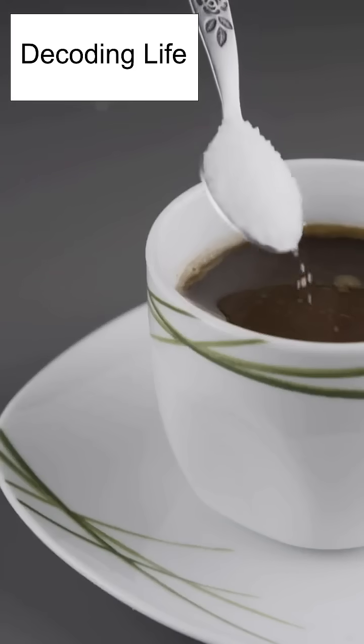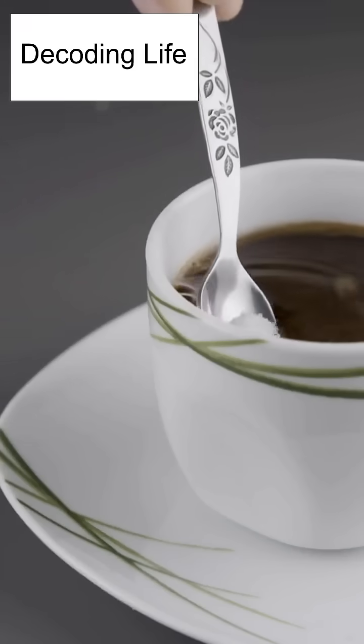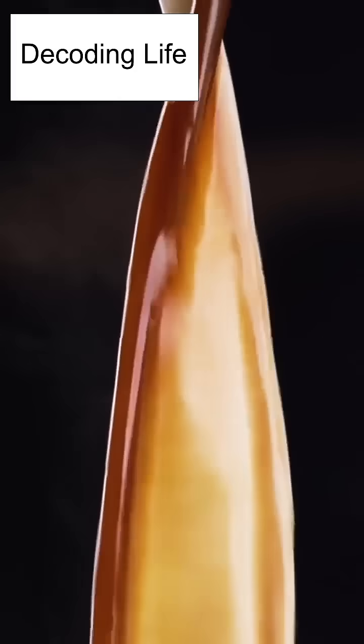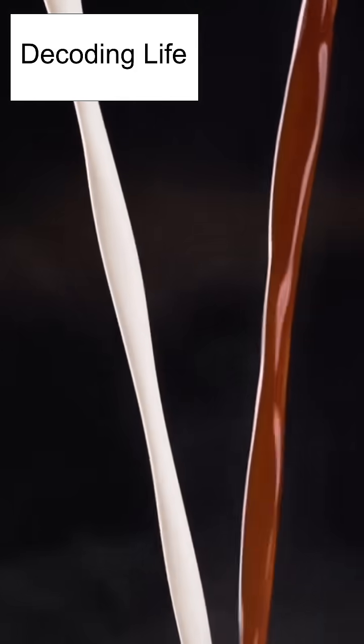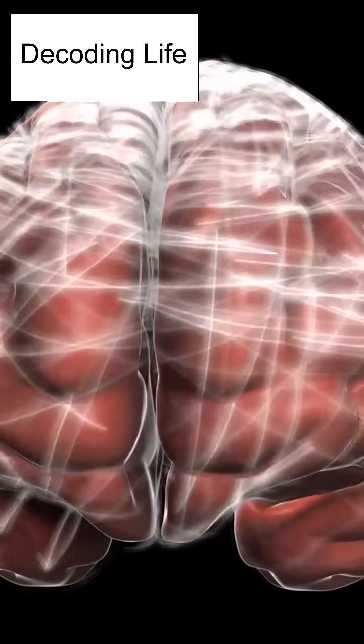Now add sugar: instant energy and a dopamine kick. And milk? It contains casein, which makes caffeine absorption smoother and last longer. Your brain loves this combo.